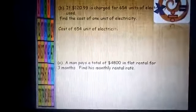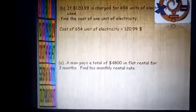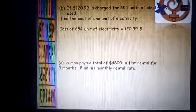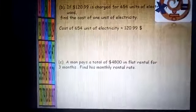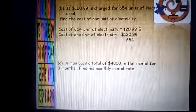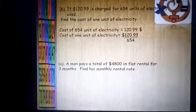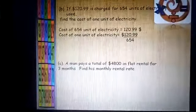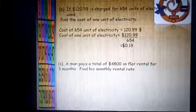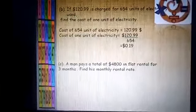Now cost of 654 units of electricity is $120.99 and cost of 1 unit of electricity will be 120.99 divided by 654. It will be the cost of 1 unit. After dividing you will get $0.19. That is the cost of 1 unit of electricity.